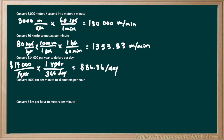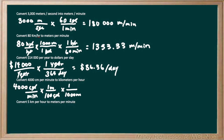The next question wants us to convert 4,000 centimeters per minute into kilometers per hour. We start off with writing 4,000 centimeters per minute and we want to convert it to kilometers per hour, so we have to change the centimeters and the minutes. Let's start by converting centimeters to kilometers. We know there are 100 centimeters in one meter, so we write 100 centimeters per one meter and these centimeters cancel out. But now we have to get rid of the meters — we know there are 1,000 meters per kilometer, so we use this ratio to cancel off the meters.